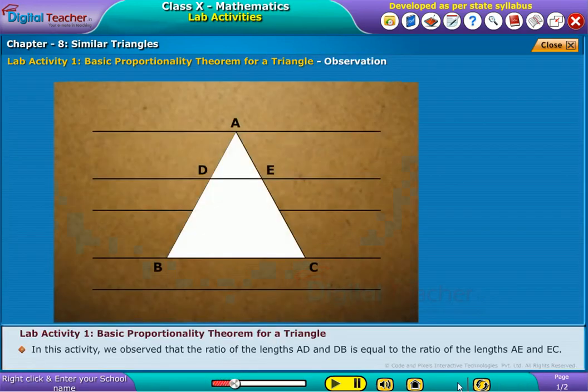In this activity, we observed that the ratio of the length AD and DB is equal to the ratio of lengths AE and EC.